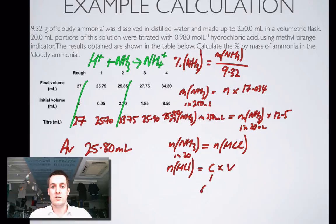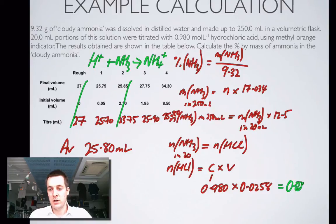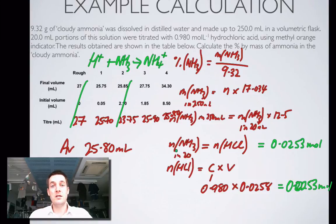So now I can start plugging values in. I know my concentration. This is 0.980, so I'm going to multiply it by my average volume. That's 0.0258, and that equals 0.0253 moles. So now my number of moles of ammonia is equal to that number of moles of HCl, which is 0.0253 moles, but bear in mind this is in 20 milliliters. So I'm going to have to multiply that by 12.5, and that equals 0.316 moles.